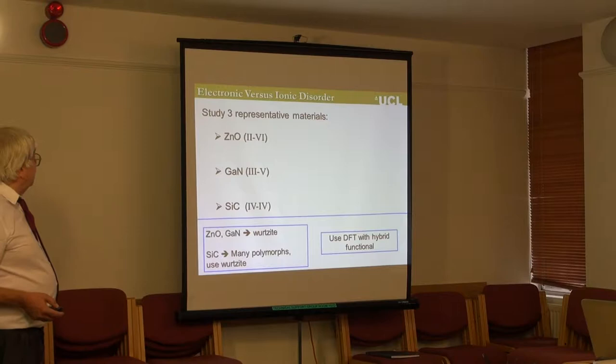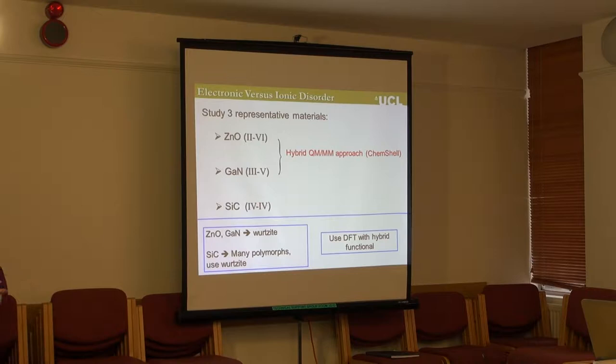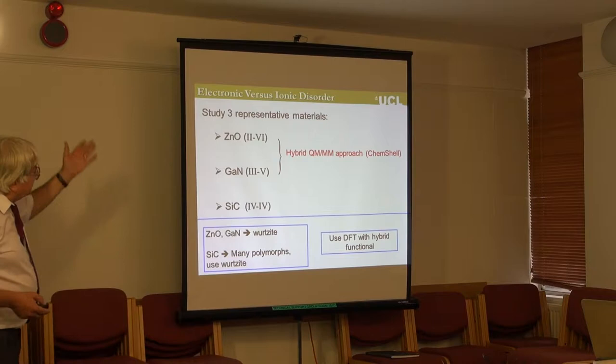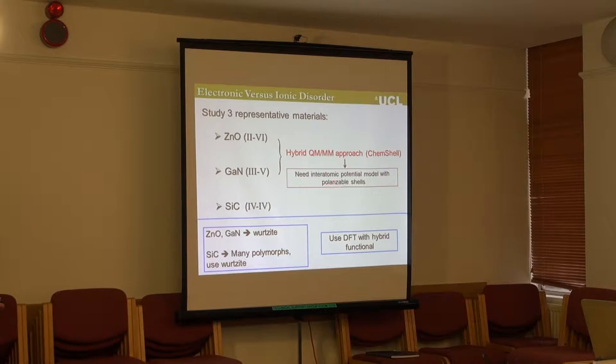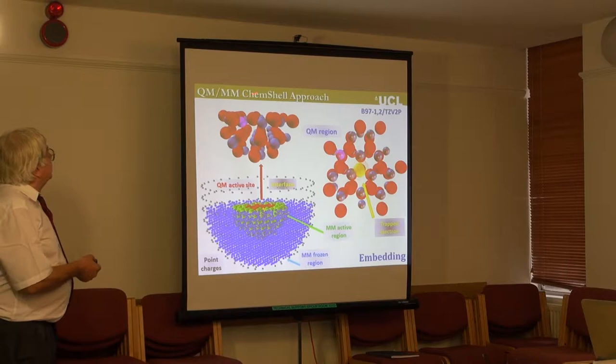We'll look at zinc oxide, gallium nitride, and silicon carbide — all important for applications — and they all have the Wurtzite structure, which is relatively simple and amenable to high-quality calculations. We'll use two approaches: first, a classic embedded cluster approach — a quantum-mechanical/molecular-mechanical method using interatomic potential models, a technique Patrick was interested in during his career. Then for silicon carbide, a supercell approach with a periodically repeating array of defects.